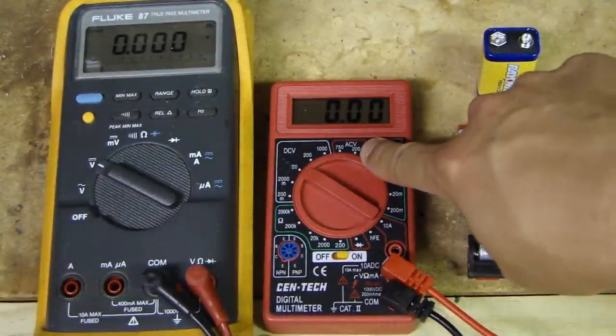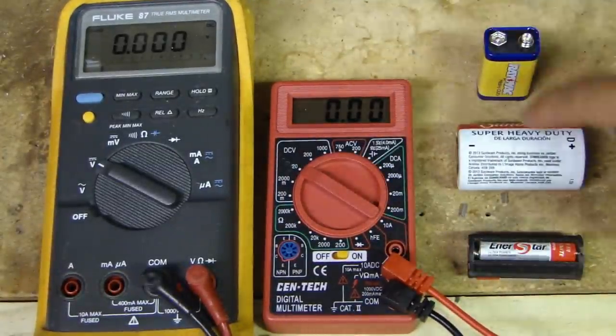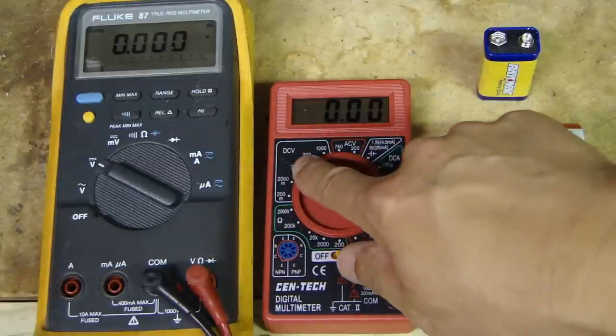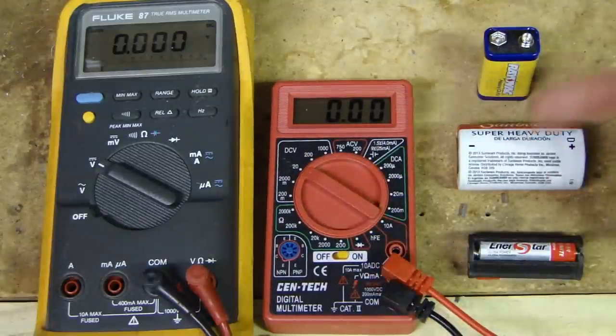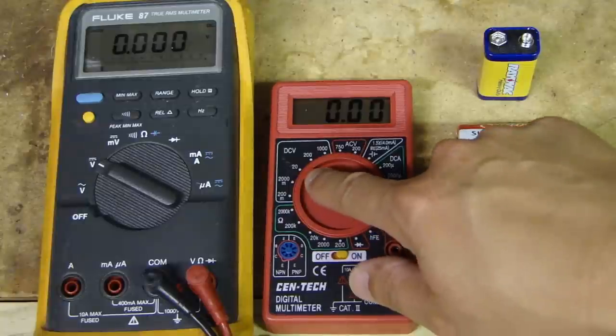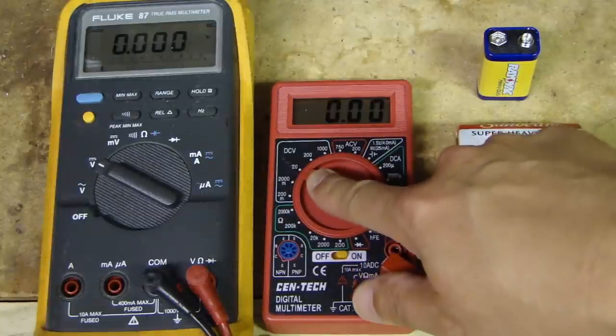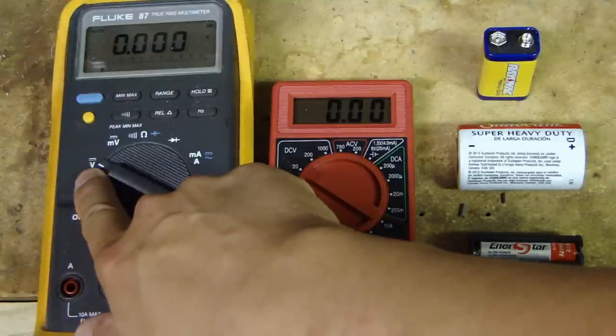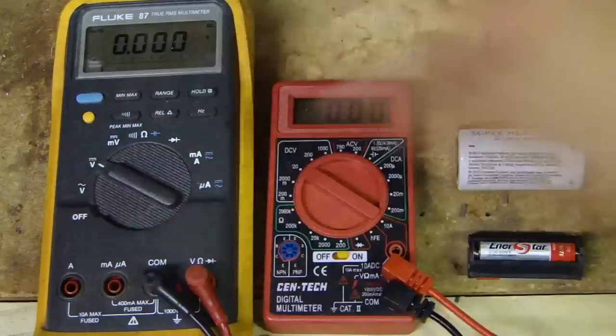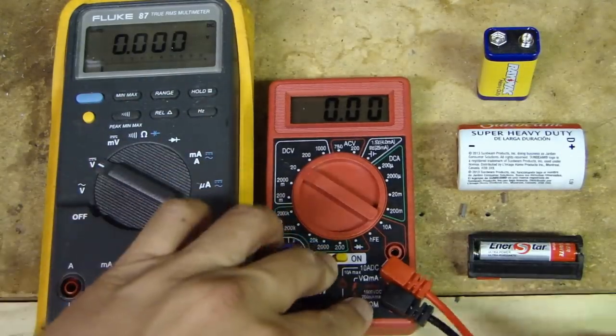So here, I've set this to DC volt, DCV. Now over here is ACV for AC voltage, but these batteries are DC. So I'm going to set this to DC voltage. And I know that these are not 20 volt, it's below that, so I've set this up to 20 volt range. And on the Fluke, as I mentioned, it's auto-ranging. It's set to voltage with a flat line for DC.